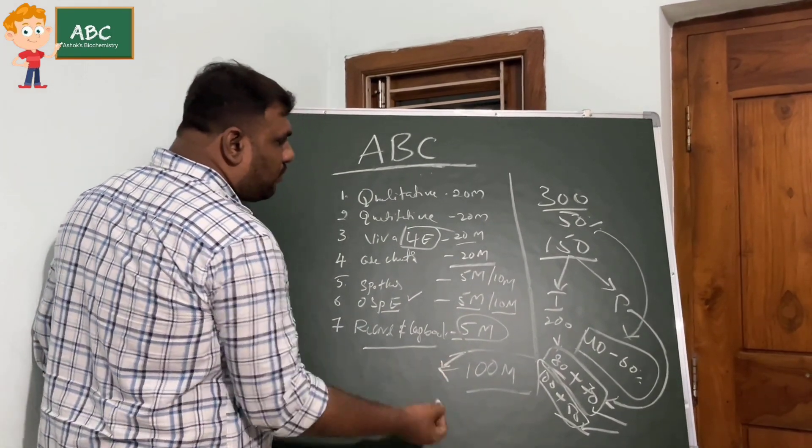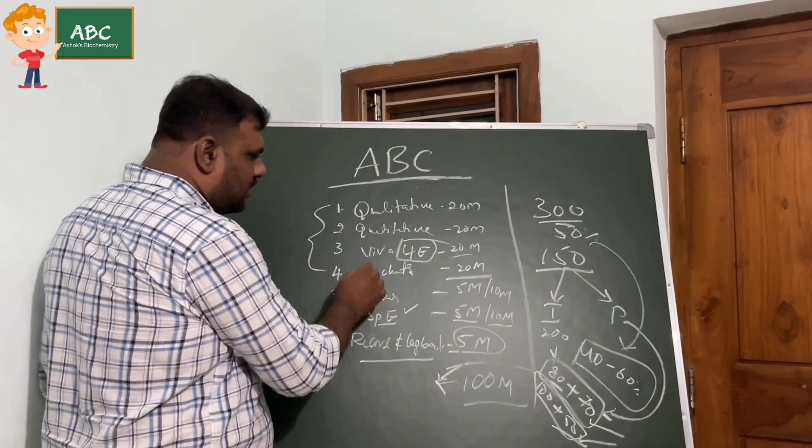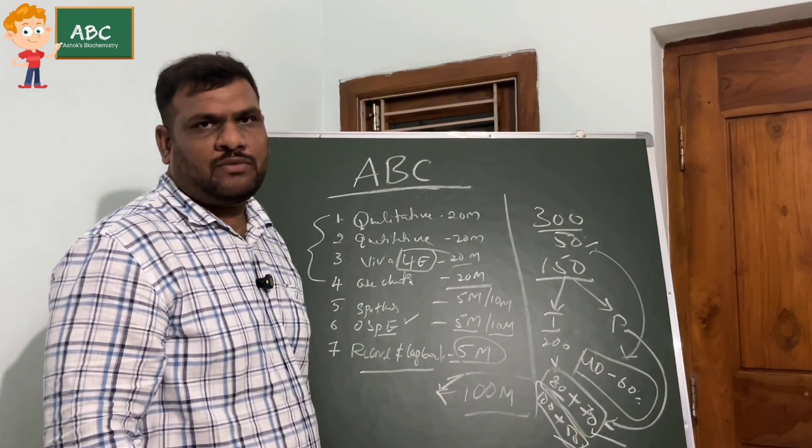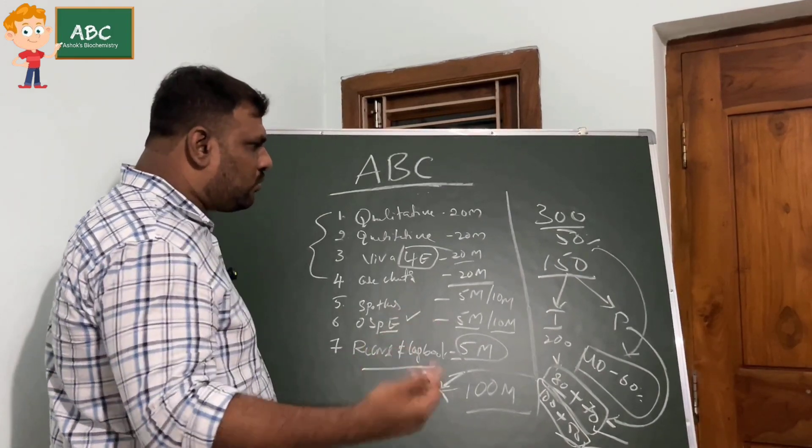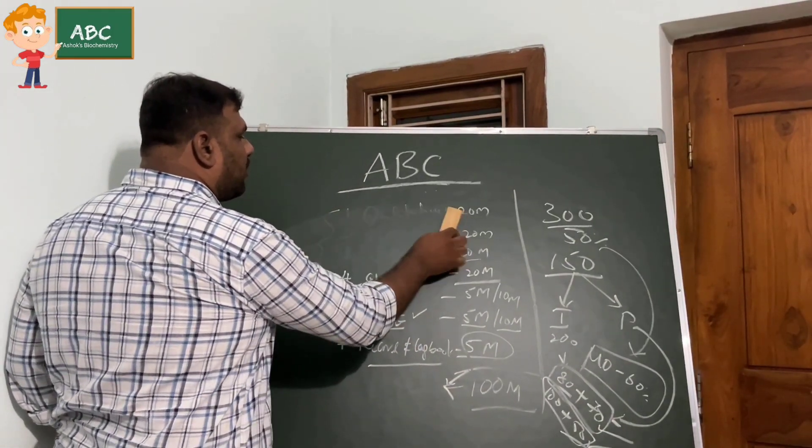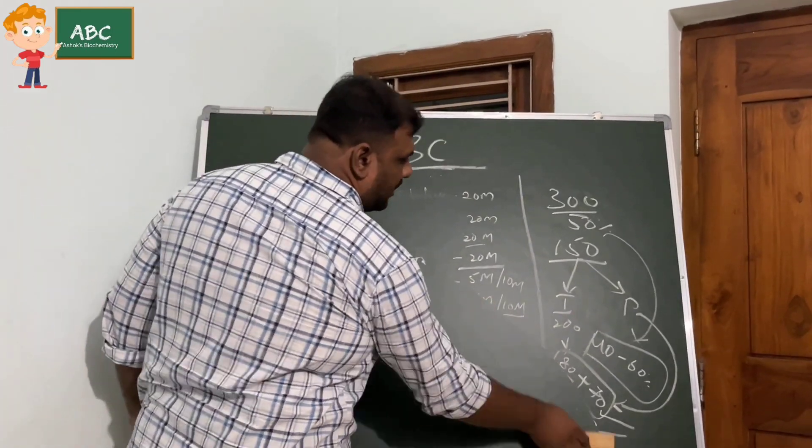All together you're going to get 100 marks. If you can do these four sections in a proper manner, you can easily score 80 marks. For that, we'll do one by one - how they will go, what qualitative will do, what quantitative will do, what are the things we're supposed to remember in these things.